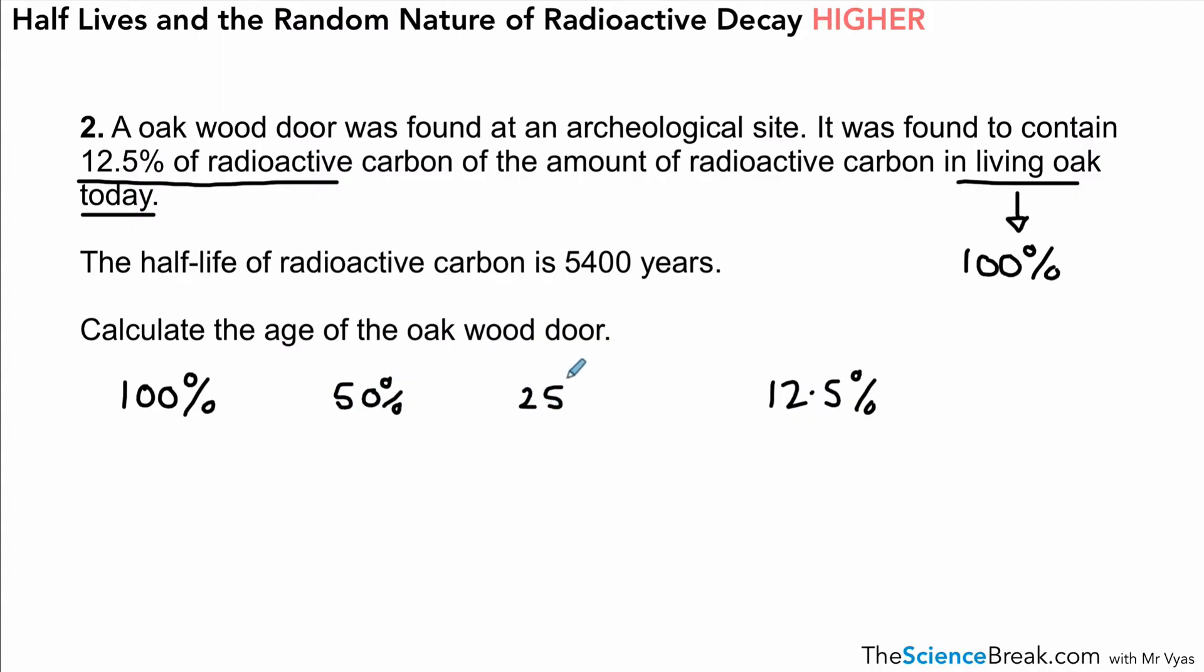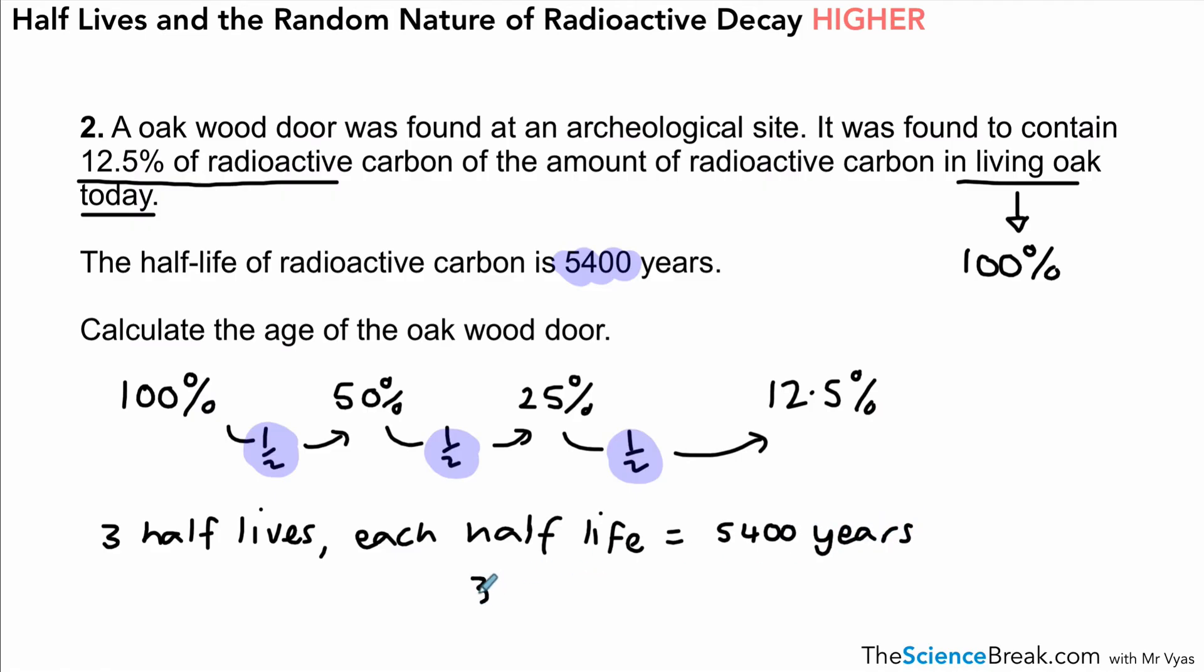If we start off at 100% and we've gone down to 12.5%, we need to work out how many half-lives have passed. We go from 100 to 50 to 25 to 12.5. That's one half-life, another half-life to get to 25, another half-life to get to 12.5—that's three half-lives that have passed. The question tells us how long a half-life is: each half-life is 5,400 years. So we would do 5,400 times 3, put that into our calculator, and we get an answer of 16,200 years.